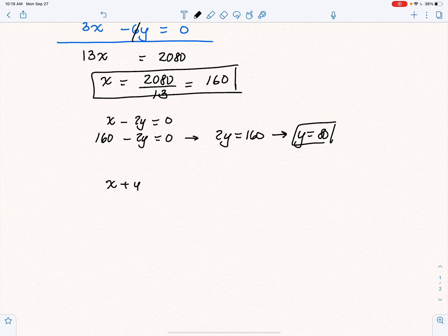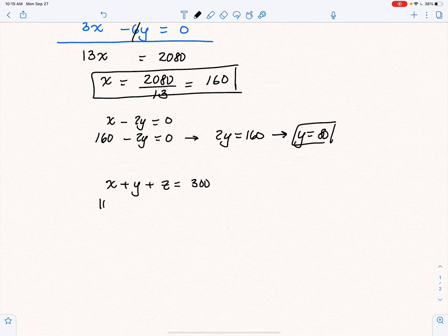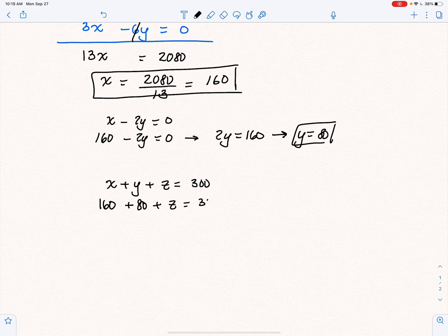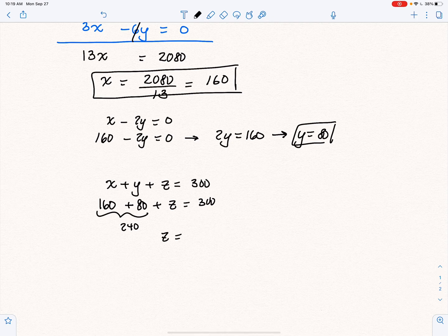we know that x plus y plus z is equal to 300. I know that x is 160. I know that y is 80. And when I add these two together, I get 240. So if I subtract 240 from both sides, I get z equals 60.